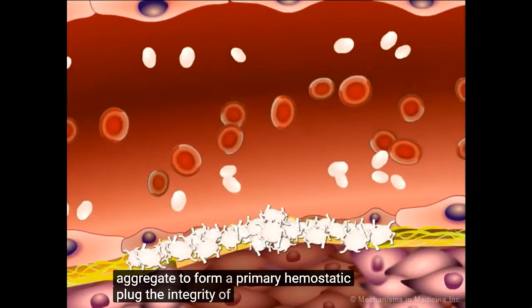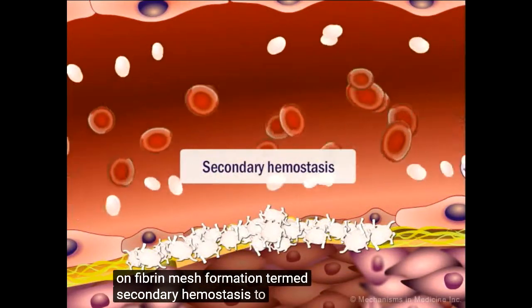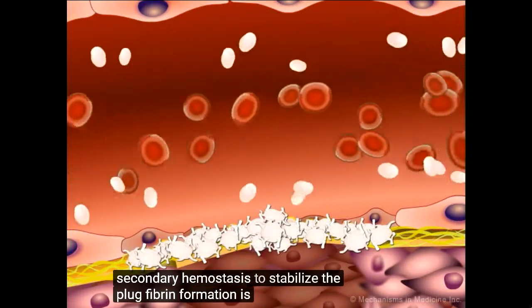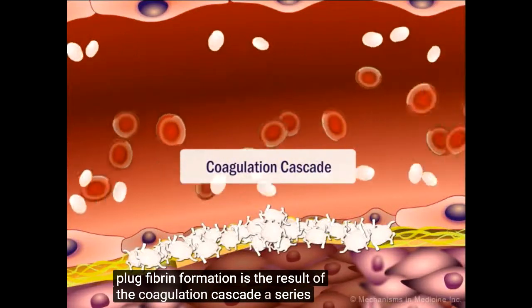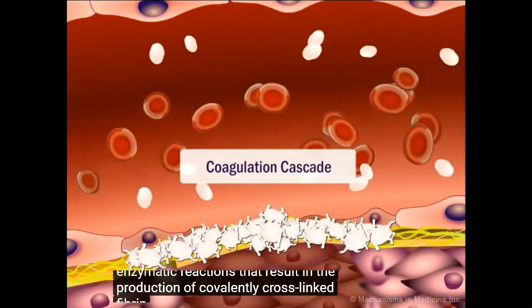The integrity of this seal relies on fibrin mesh formation, termed secondary hemostasis, to stabilize the plug. Fibrin formation is the result of the coagulation cascade, a series of enzymatic reactions that result in the production of covalently cross-linked fibrin.